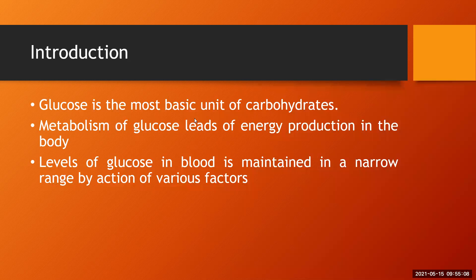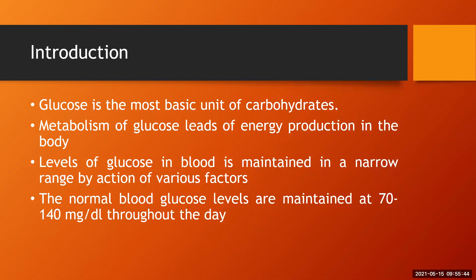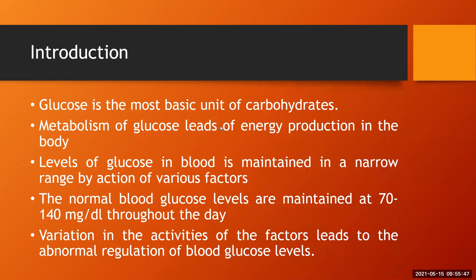The blood glucose level is maintained in a very narrow range by various factors responsible for either increasing or decreasing it. Normally, blood glucose fluctuates between 70 to 140 milligrams per deciliter throughout the day, irrespective of food intake — whether you are in a fasting state or a well-fed state.